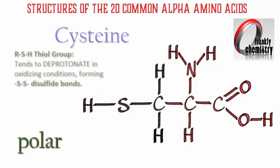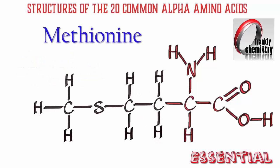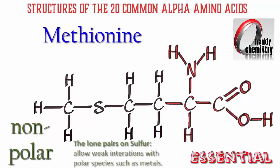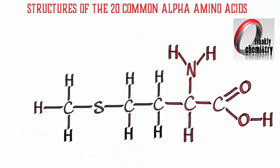Here's our next polar amino acid, cysteine. It's got CH2SH as its R group. That SH thiol group tends to deprotonate in oxidizing conditions, which allows formation of a special bond known as a disulfide bond, which contributes significantly to the structures of certain proteins. And here's methionine, which also has a sulfur in its structure, but not connected to a hydrogen — it's nonpolar. The lone pairs on the sulfur allow weak interactions between the sulfur and polar species such as metals.